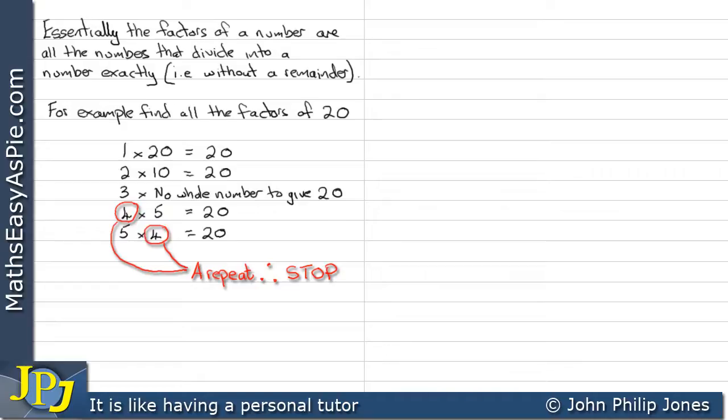We stop at this point when we have written down a figure more than once. And in this case, we've wrote 4 down more than once, so at that point, we know we discontinue writing what looks a bit like a times table down. Now what we can see here is that this particular row, we have 3, and we've tried to find the number to multiply to give 20, and we can't. So we discount that. That's not a factor.